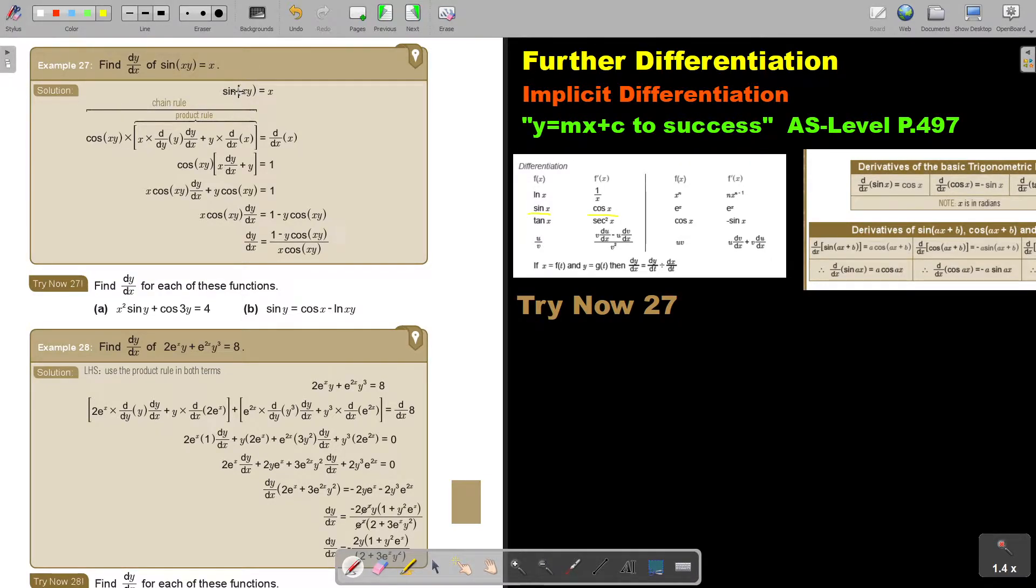The chain rule will say, for example, this was sin(U) and U was XY. If we differentiate the outside, it will become cos(U), so it will become cos(XY). That's the outside. Now we will differentiate the inside, which is the product rule. I rewrite the first one, differentiate the second one, and as soon as I differentiate to Y, I write dy over dx. Then I rewrite the second one and differentiate the first one.